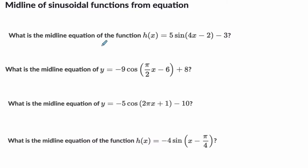So here they are. In the first equation, it's negative 3. It's this number right here. So the midline would be y equals negative 3. It's a horizontal line at negative 3. Here it's at y equals 8.